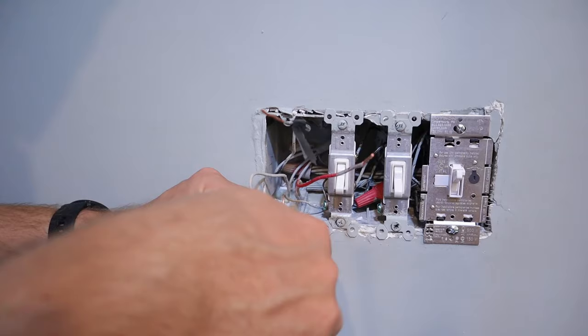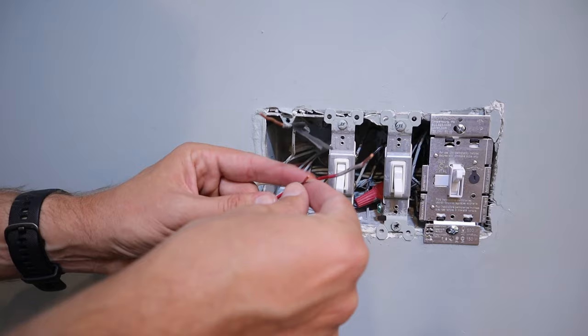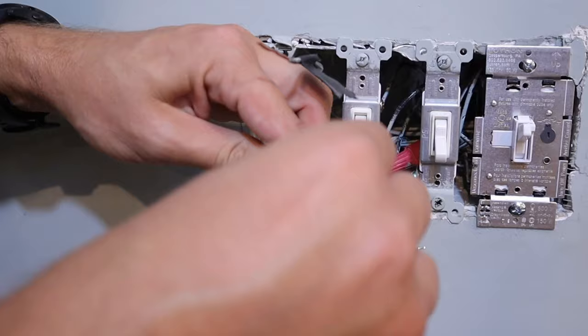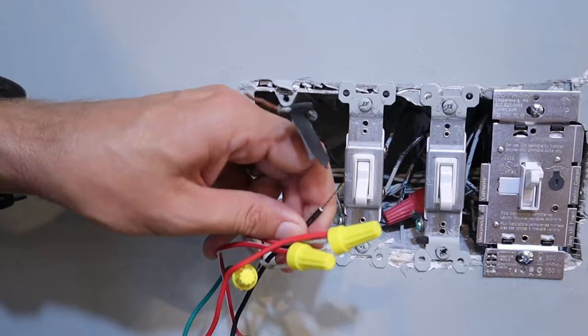Next, we'll start with this first traveler wire, which is red with a white stripe on it, and attach it to, in this case, this white traveler wire. Next, we'll attach this solid red traveler wire to this solid red traveler wire coming out of the light switch.